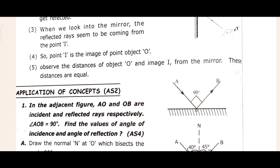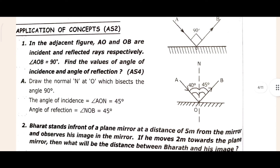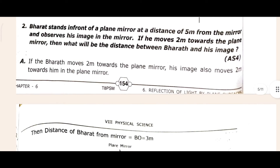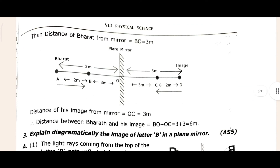If that's complete, come to the Application of Concept section. That's the first question of Application of Concept. In the adjacent figure, AO and OB are the incident and reflected rays. After that, come to the second question — the answer is below.